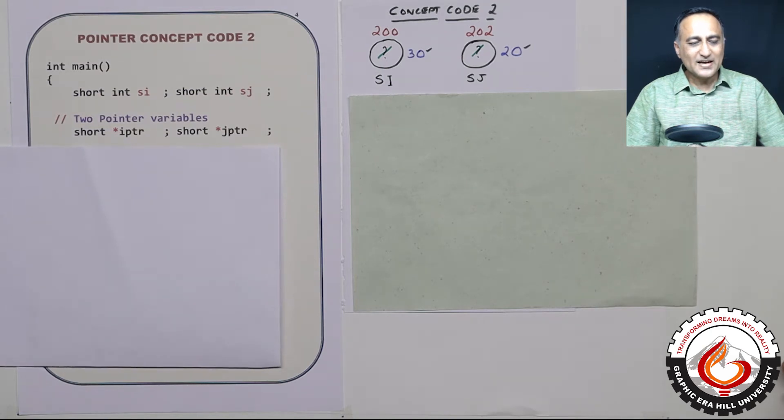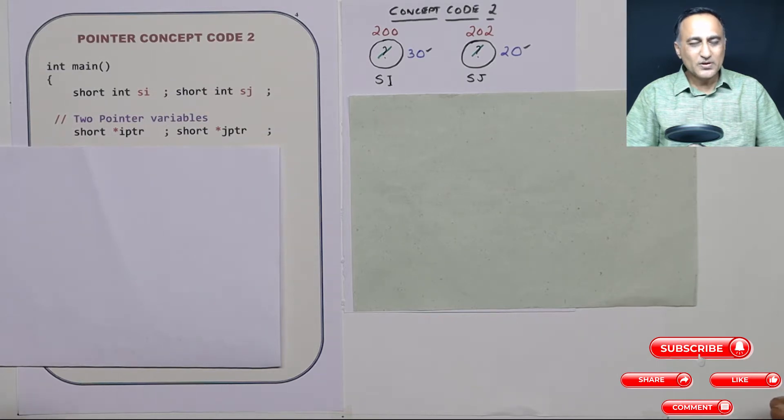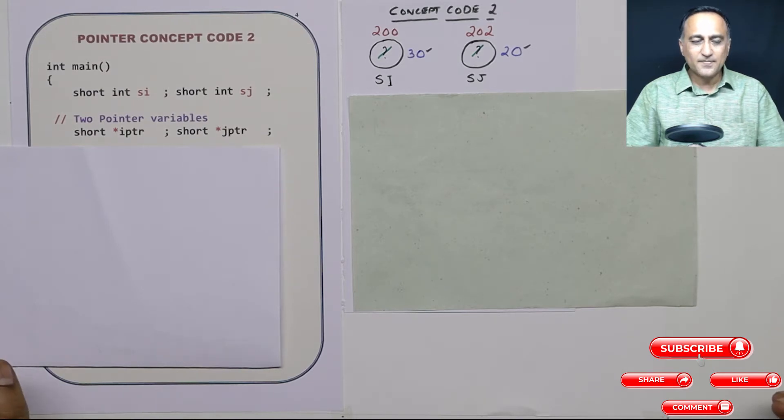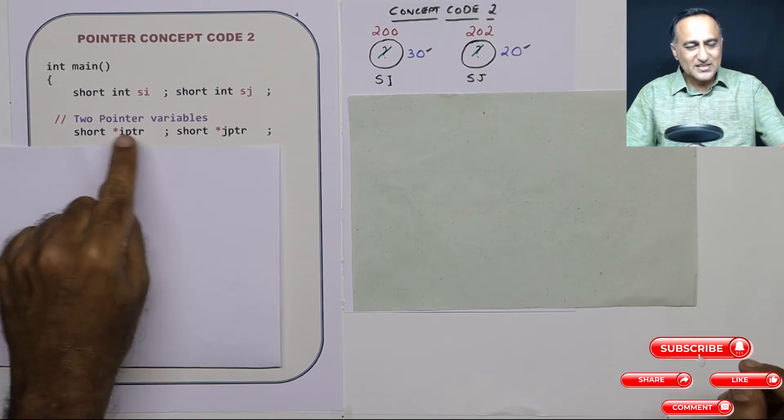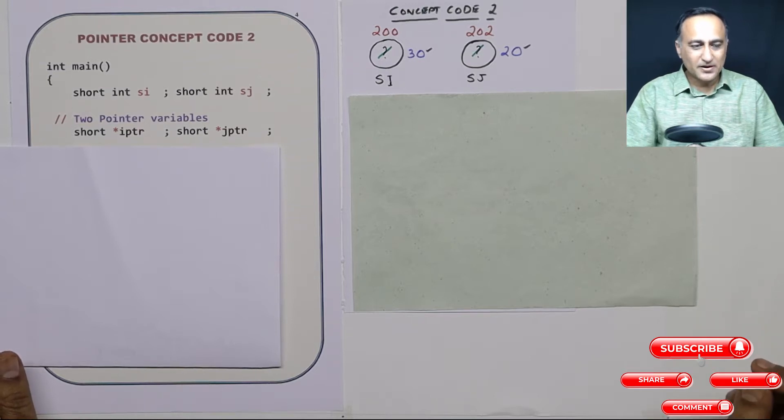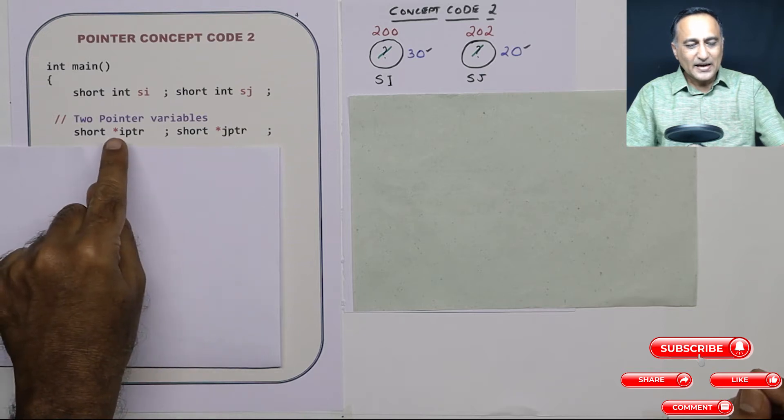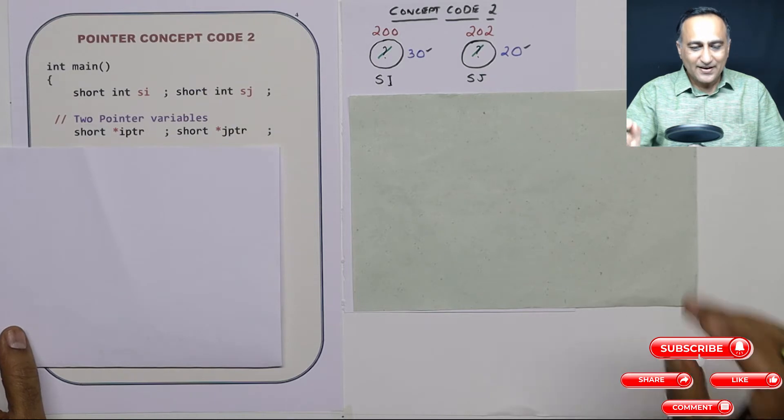Now what I have done is I am declaring two special type of variables with the star. It says short star IPTR and short star JPTR. These are also normal variables like si and sj, except that the star indicates that in place of numbers, they are going to contain addresses. The star indicates that IPTR and JPTR in place of values are going to contain addresses.